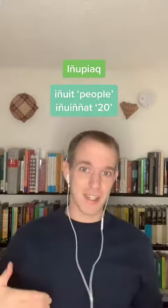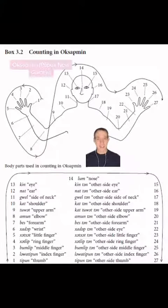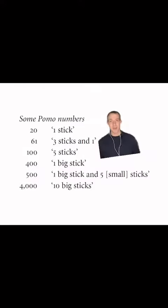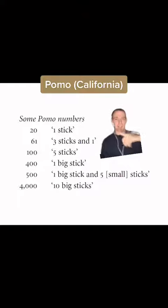Once you've counted all your fingers and toes, that's one person. In the Inuit languages, the word for 20 comes from the word for person. In the Bororo language, the word for 9 is 'the one to the left of my middle finger,' and the one for 13 is 'the one in the middle of my foot.' The Kaluli language of Papua New Guinea counts up the body, and the Oksapmin language of Papua New Guinea has a base 27 counting system. The Pomo language of California counted using sticks rather than body parts, so that the word for 20 is 'one stick.'